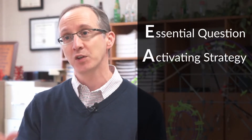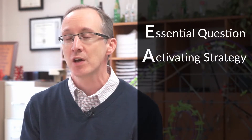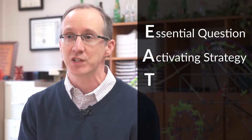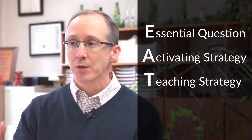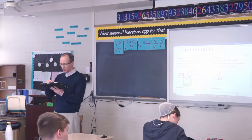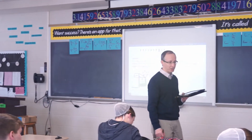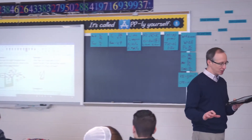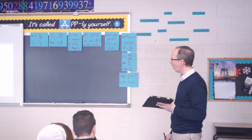Then we have what takes most of the lesson time: the Teaching Strategy. The T in EATS stands for Teaching Strategy — the set of activities planned to actually teach the material and help students connect and understand it. For example: there's our right triangle — the ladder is 20 feet long, so we label the hypotenuse 20, and the base of the ladder is five feet from the wall.